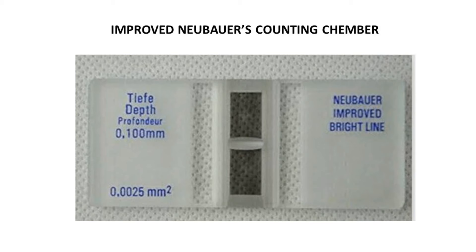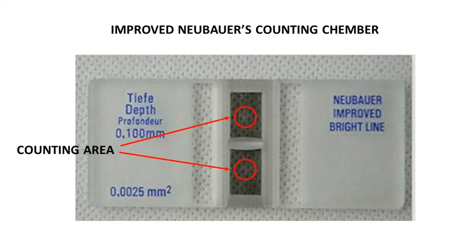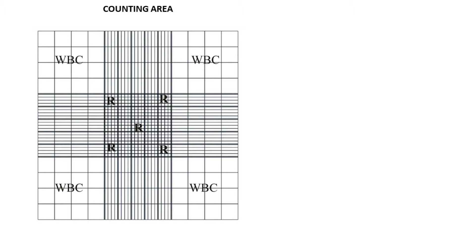Now we are seeing the Improved Neubauer Counting Chamber. There are 2 counting areas present. The counting area is a 3 by 3 mm square, divided by 2 vertical and 2 horizontal lines into 9 squares. The 4 corner squares are for WBC count and the 1 central square is for RBC count.